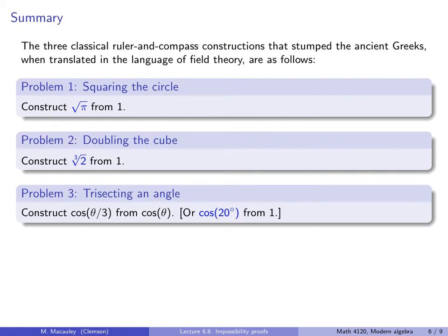In summary, the three classical ruler and compass constructions that stumped the ancient Greeks, when translated into the language of field theory, are as follows. Problem 1, squaring the circle, becomes the problem of constructing root pi from 1. The second problem, doubling the cube, becomes the problem of constructing the cube root of 2 from 1. And finally, the third problem, trisecting an angle, becomes the construction of the cosine of theta over 3 from the cosine of theta, which for certain angles of theta will work. So one that it does not work for is 60 degrees. In other words, construct the cosine of 20 degrees from 1.